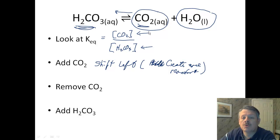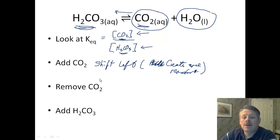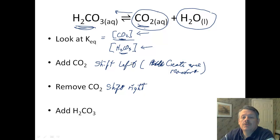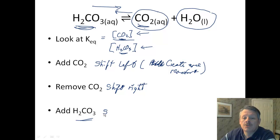What happens if I were to remove carbon dioxide? If I make my top number smaller, I have to make my bottom number smaller to maintain my ratio. So that means this will shift right. And if we add some carbonic acid — if I add this stuff — I have to shift to the right to produce more of the stuff on the right side.